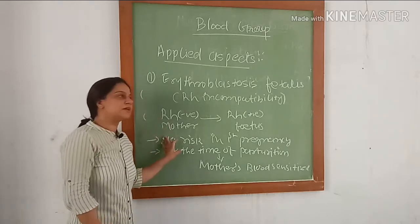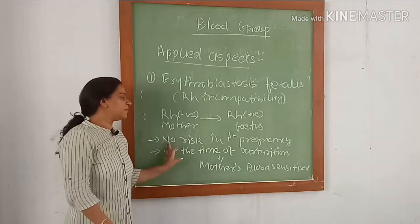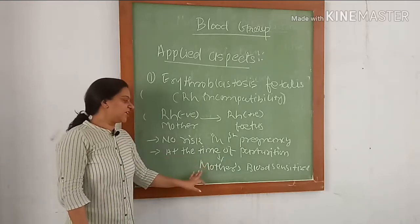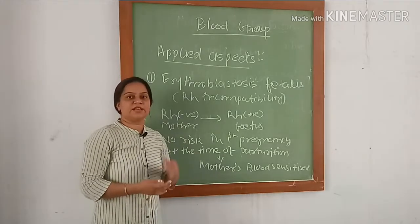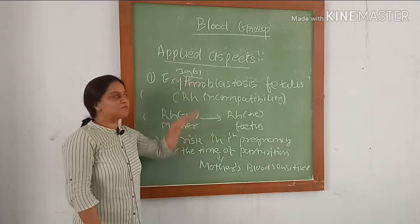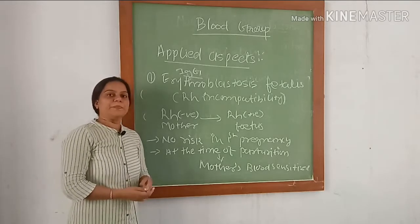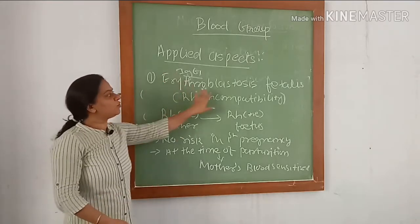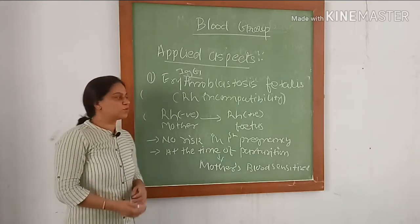When an RH negative mother carries an RH positive fetus, if the mother was not previously sensitized with RH positive blood, there will be no risk in the first pregnancy and the first child will be normal. At the time of parturition, there will be sensitization of the maternal blood, which will develop RH antibodies. RH antibodies are IgG in nature and can cross the placenta. In the second pregnancy, these IgG RH antibodies cross the placenta and destroy the red blood cells of the fetus, causing blast cells to appear in circulation — that is why it is known as erythroblastosis fetalis. It can be prevented by giving injectable anti-RH antibodies to the RH negative mother.